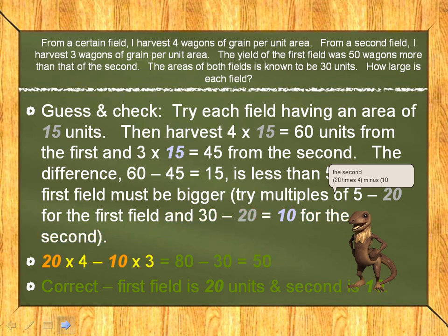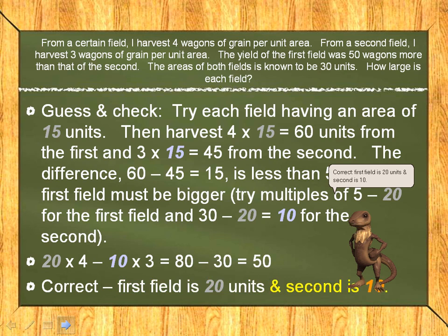20 times 4 minus 10 times 3 equals 80 minus 30 equals 50. Correct. First field is 20 units and second is 10.